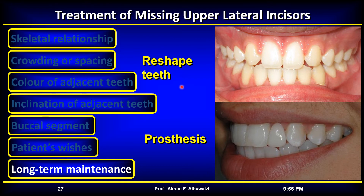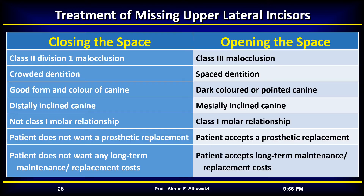To summarize, closing spaces is indicated in Class 2 Division 1 malocclusion, crowded dentition, good form and color of the canines, distally inclined canines, non-Class 1 molar relationship, and when the patient does not want a prosthesis or long-term maintenance costs. Opening the space is indicated in Class 3 malocclusion, spaced dentition, dark or pointed canines, mesially inclined canines, Class 1 molar relationship, and when the patient accepts prosthetic replacement and long-term maintenance costs.